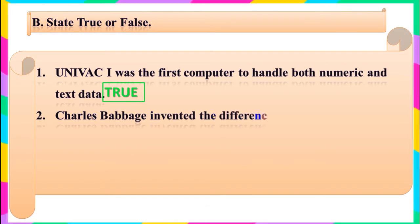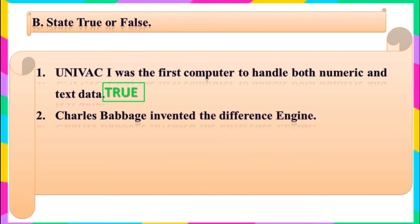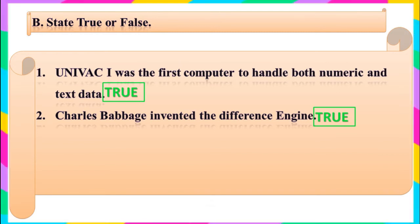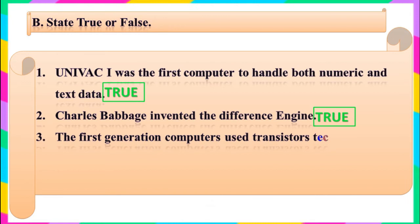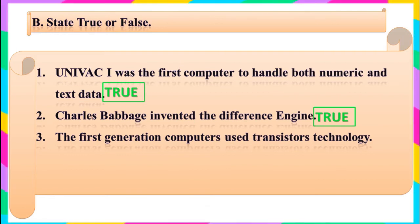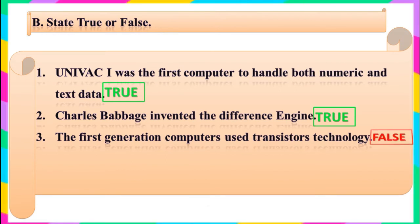Question 2: Charles Babbage invented the Difference Engine. Children, got the answer? Yes, it is true. The statement is true. Question 3: The first generation computers used transistor technology. Children, is this statement true or false? Yes, you are right. It is false.